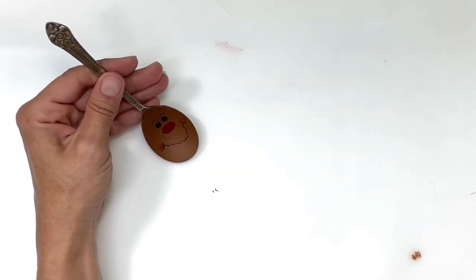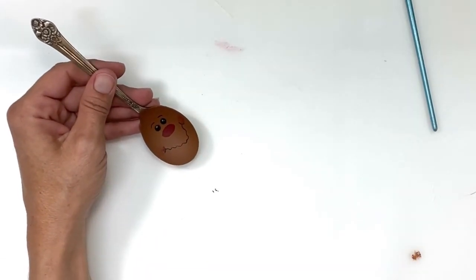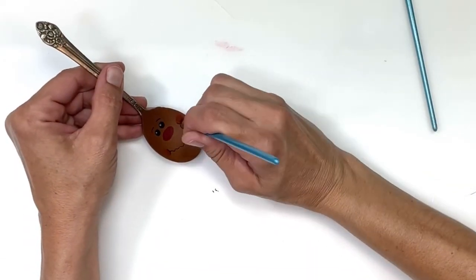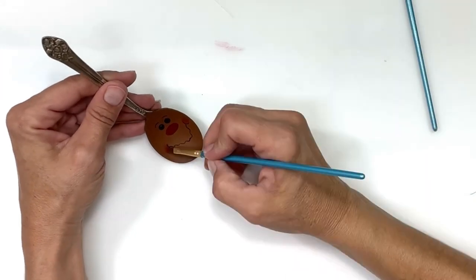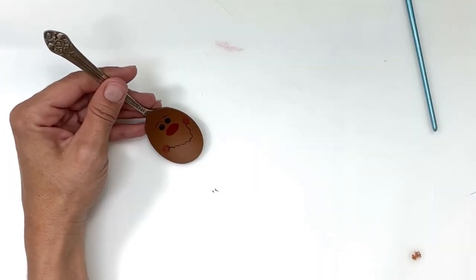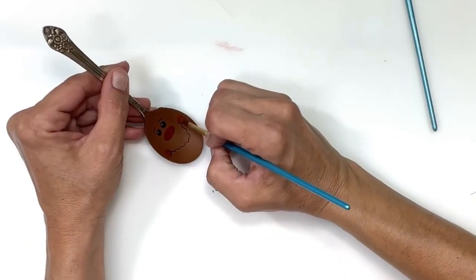So I'm just using a paintbrush that was kind of ruined and just dry brushing some of that red on. I'm going to do that right where I put those half circles on his mouth.